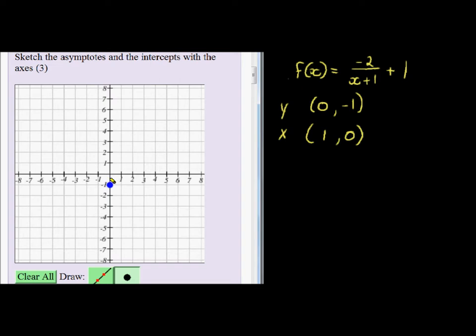And when y is 0, x is equal to positive 1. Let's do it exactly, there we go. And then the next is the asymptote.